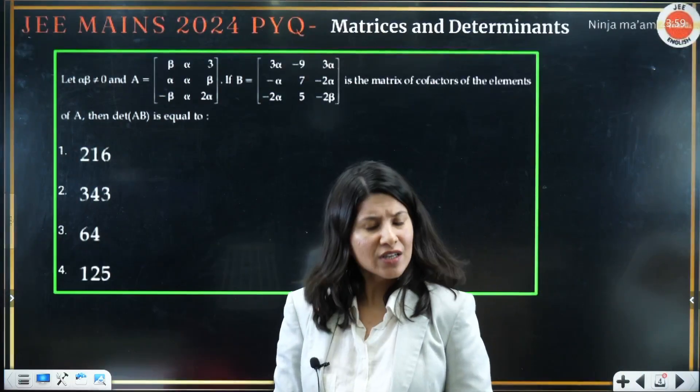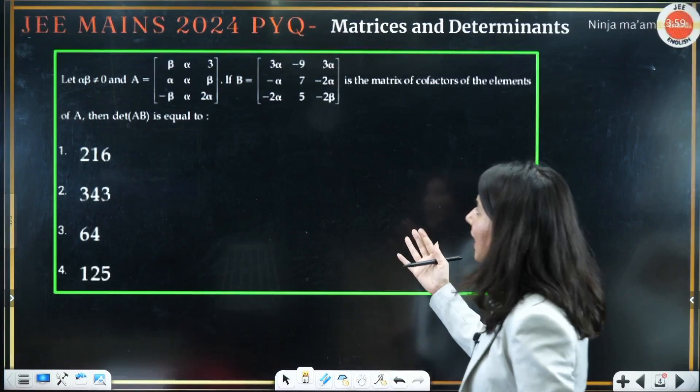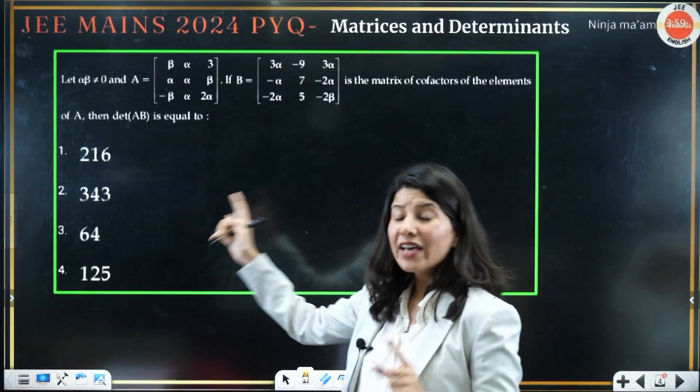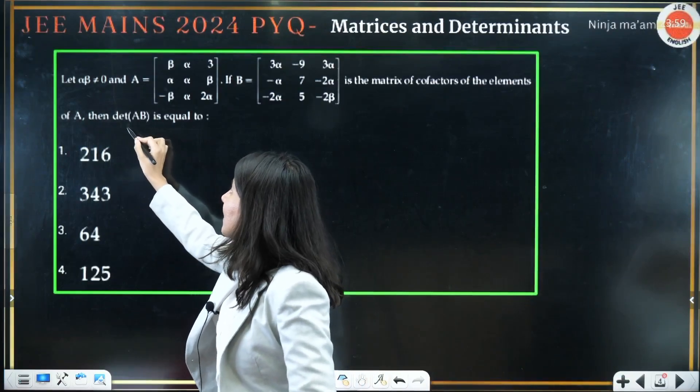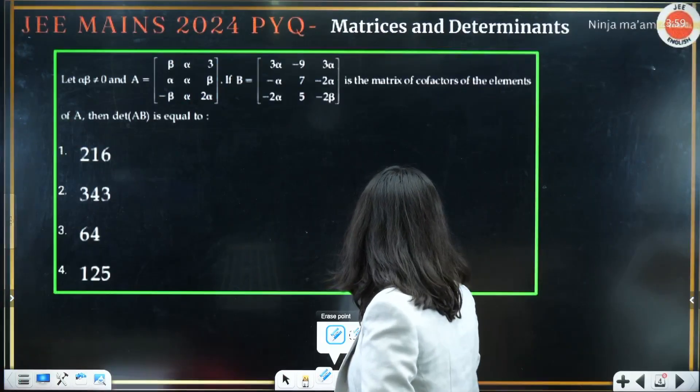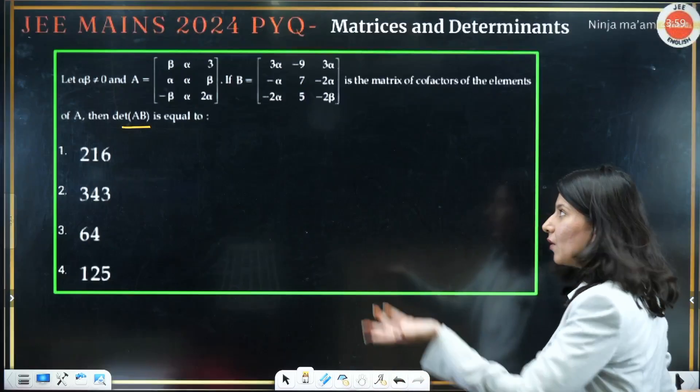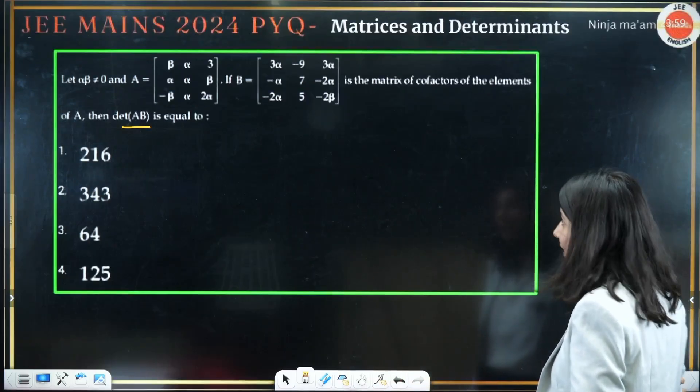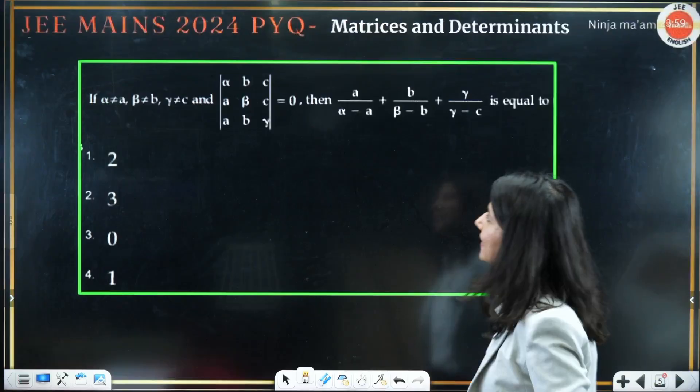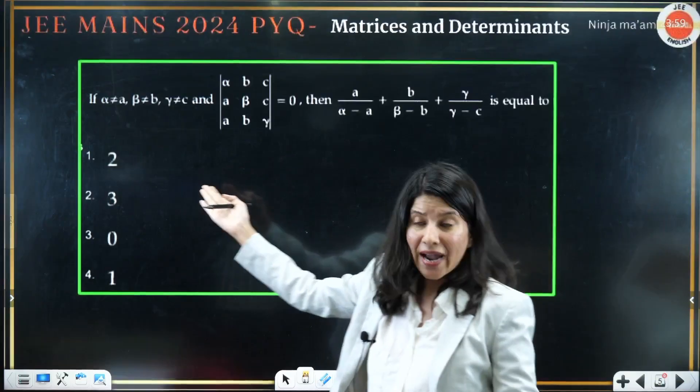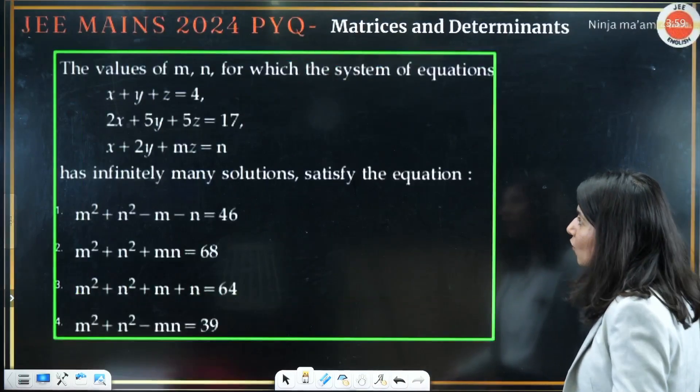similar thing observed in January attempt as well, that there were multiple instances where you need to calculate determinant of 3×3 matrix. So over here you can clearly see you have to expand this determinant.